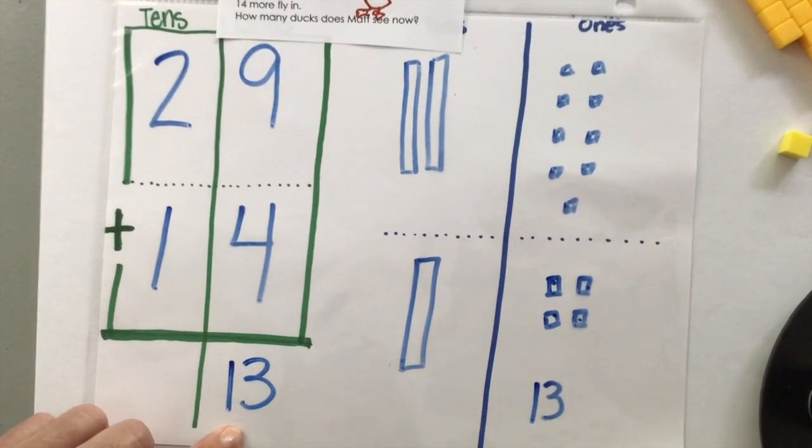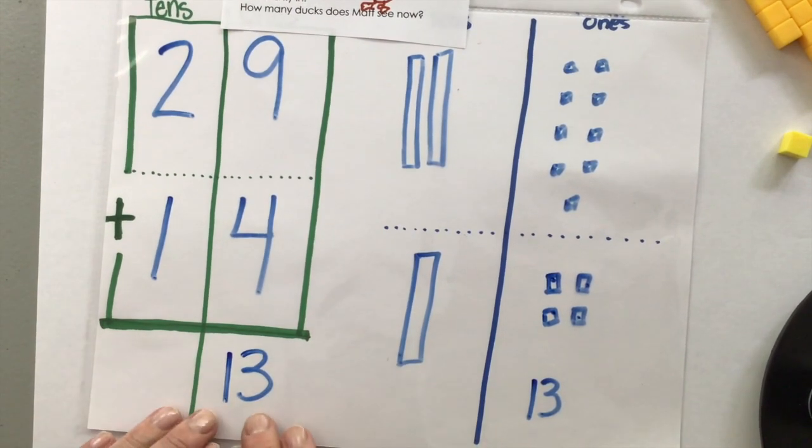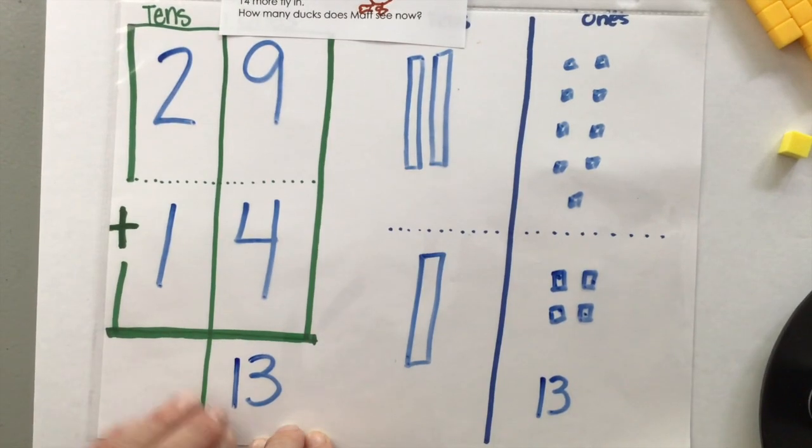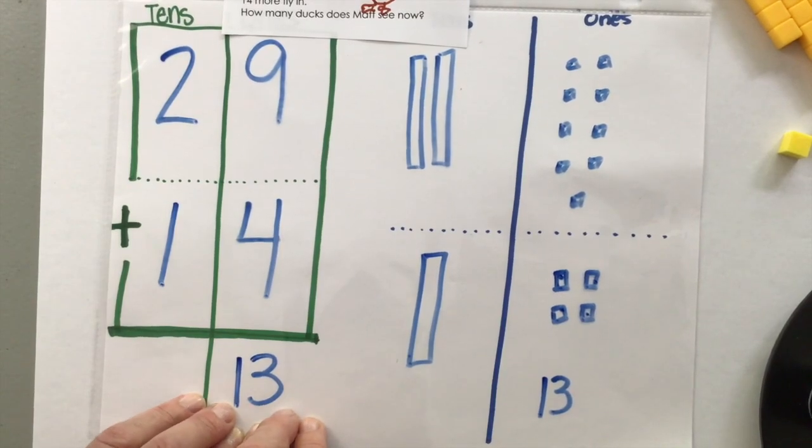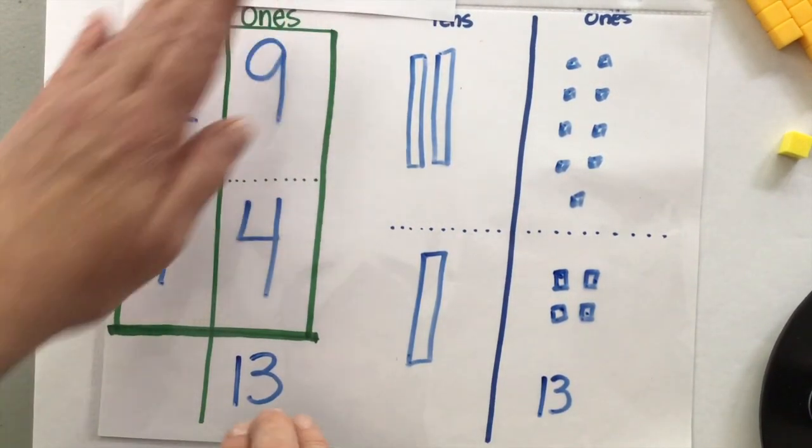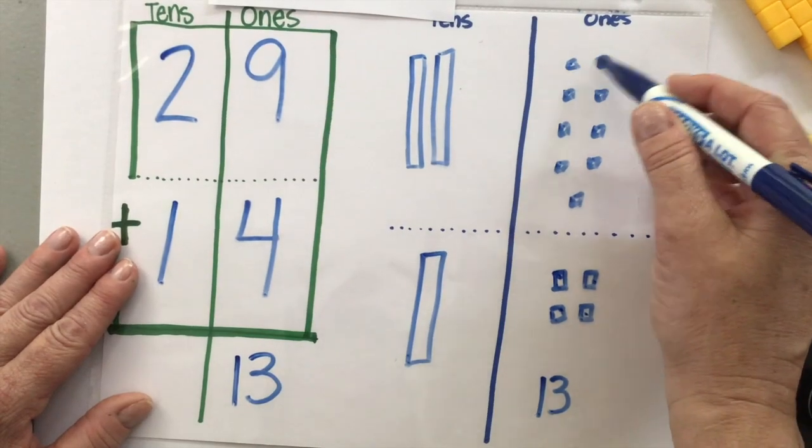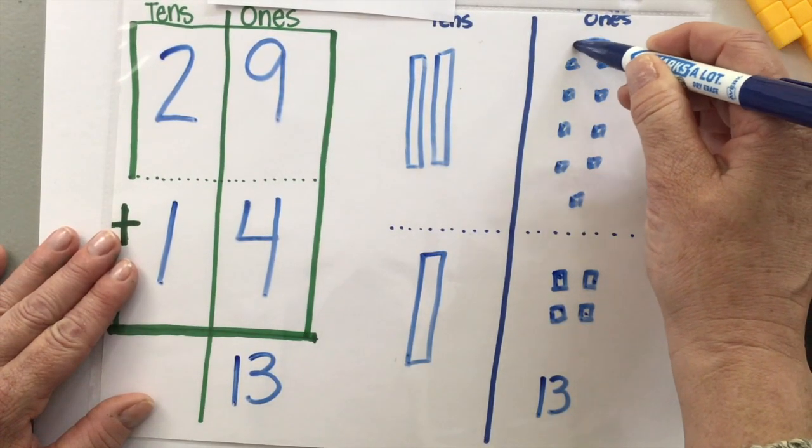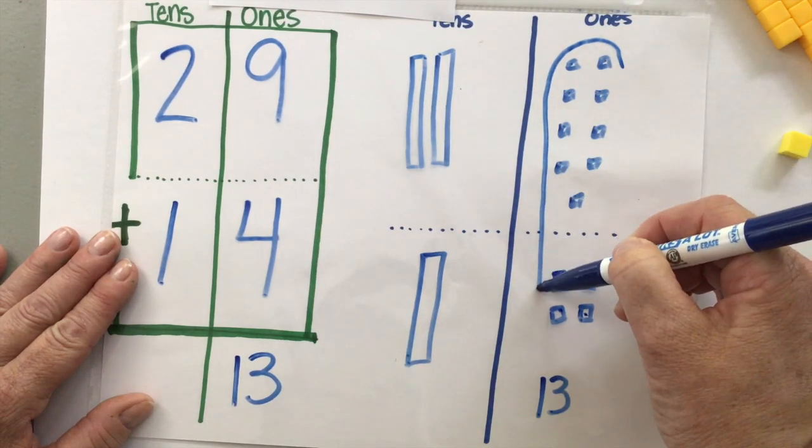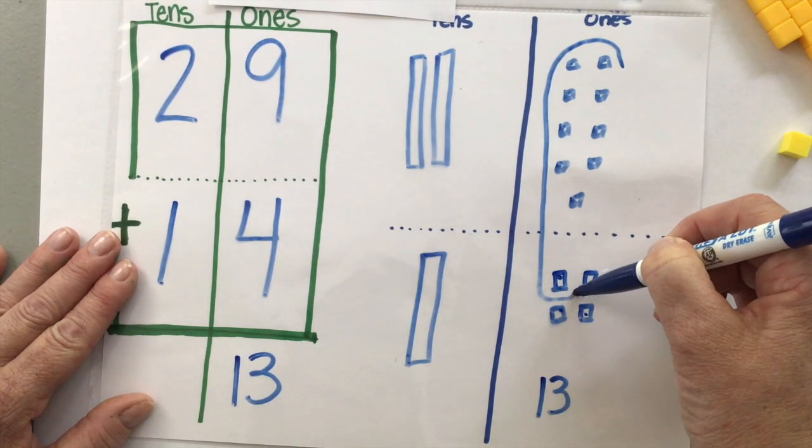I have 13 ones, but I can't write it like that. So I just want to make sure you know we're just temporarily putting that 13 here until we figure out our sets of 10. So I need to regroup. So I need to make a set of 10. I know that was nine and that makes 10.